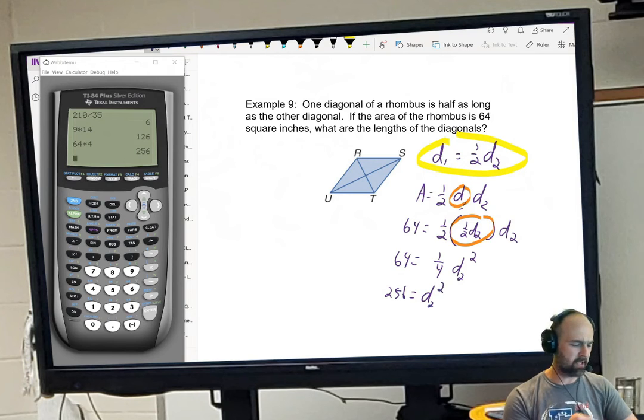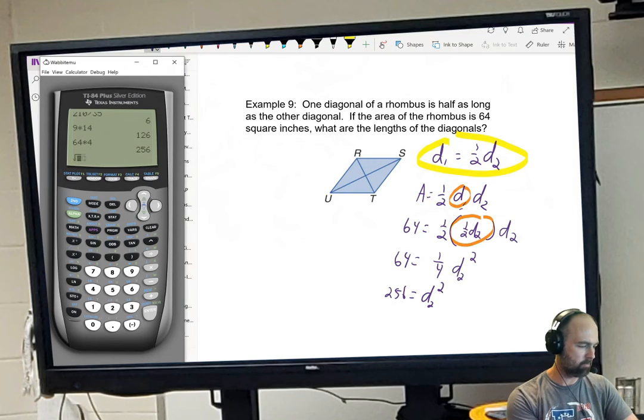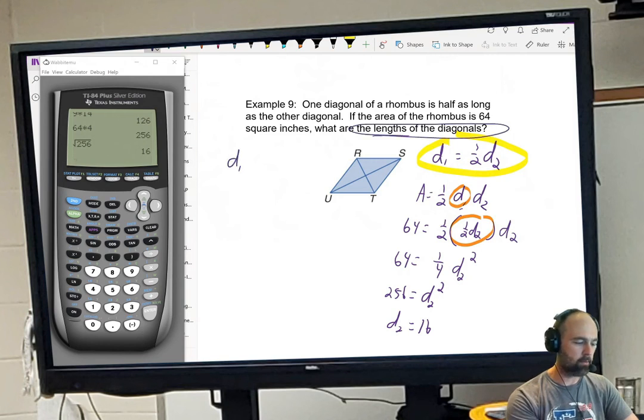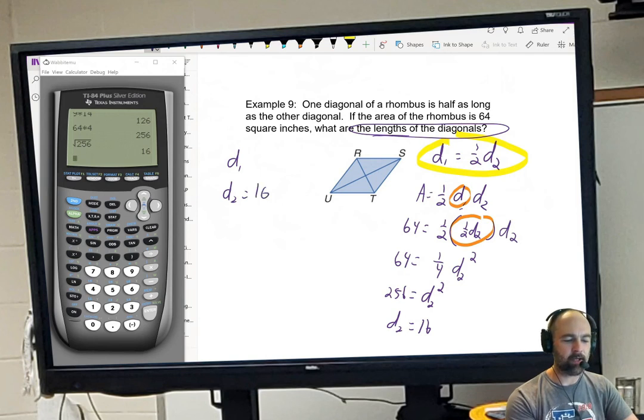Take the square root of both sides. And I think that was 16. I know I've already done that today, but my memory is going away. Yep, it is 16. So diagonal 2 is equal to 16. Now we want to know the length of both diagonals. So I know d2 equals 16. And over here I can see that d1 is one half of that, so it's just going to be 8. And it gave me earlier my units were square inches, so these are both inches.